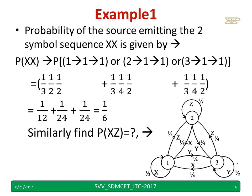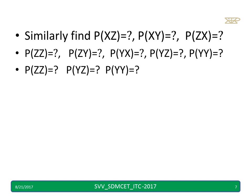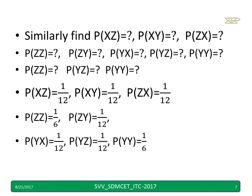Similarly, we can calculate the probabilities of xz, xy, yz, yx, and all other two-symbol sequences. Pause for a minute, understand this and try to calculate probabilities of xz, xy, yz, zx, and others. The answers are: probability of xz equals 1 by 12, probability of xy is 1 by 12, and probability of zx is 1 by 12. You can compare your calculated values now.